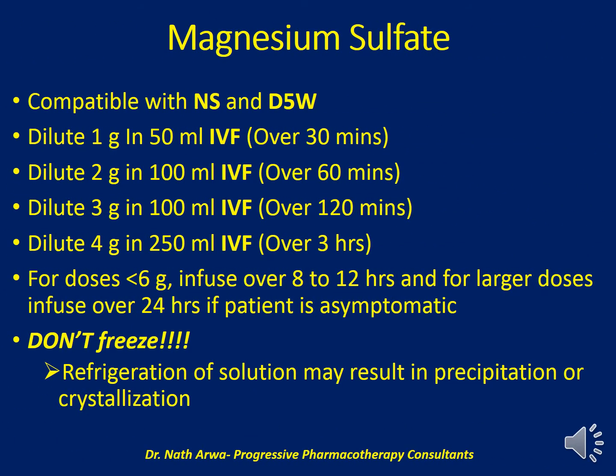Magnesium sulfate is compatible with both 5% dextrose and normal saline. 1 gram should be diluted in 50 ml of IV fluid and infused over half an hour; 2 grams should be diluted in 100 ml and infused over 1 hour; 3 grams should be diluted in 100 ml and infused over 2 hours; and 4 grams should be diluted in 250 ml of IV fluid and infused over 3 hours.